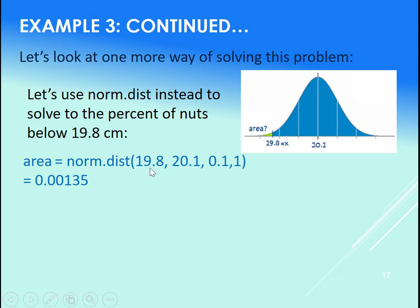In that case, if you're looking for the percentage or the area, use your norm.dist call. So this is also a great way to answer this problem. Use norm.dist, put in the 19.8 for your x, 20.1 for your mean, 0.1 for your standard deviation. And then don't forget the comma 1 when we're using norm.dist. That gives us 0.00135. Let's go try that.